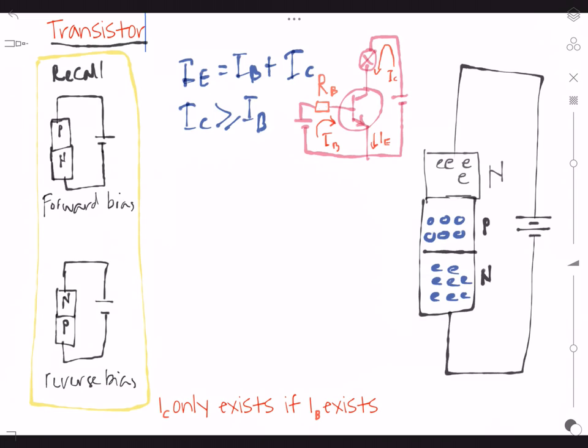So for reverse bias, look here. We have big depletion layer. So the same thing happens here, we have depletion layer over here. So as a result, current cannot flow. There is no current because of the depletion layer increases. So an electron here does not have enough energy to cross the depletion layer and then go to positive terminal.